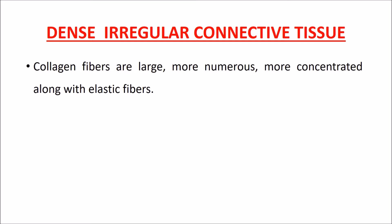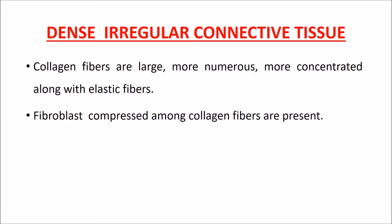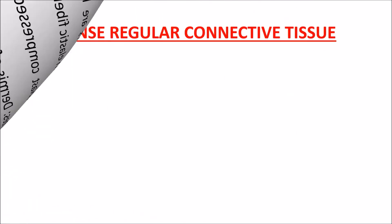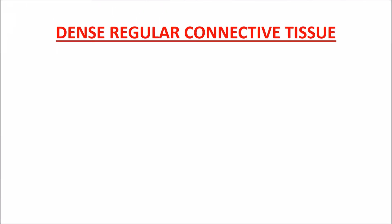Dense irregular connective tissue: collagen fibres are large, more numerous, and more concentrated along with elastic fibres. Fibroblasts compressed among collagen fibres are present. Examples include the dermis of skin and interlobular connective tissue of mammary gland.